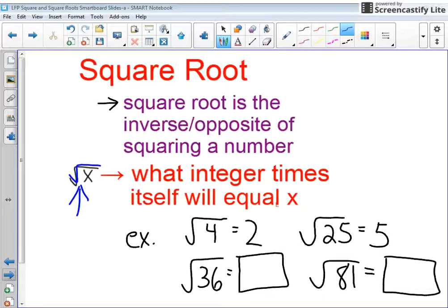And the definition is what integer times itself will equal x. So I have some examples on the board, and I have the square root of 4. And I think to myself, back to the definition, what integer times itself will equal x? And the answer is 2, because 2 times 2 equals 4. So we say that the square root of 4 is equal to 2.